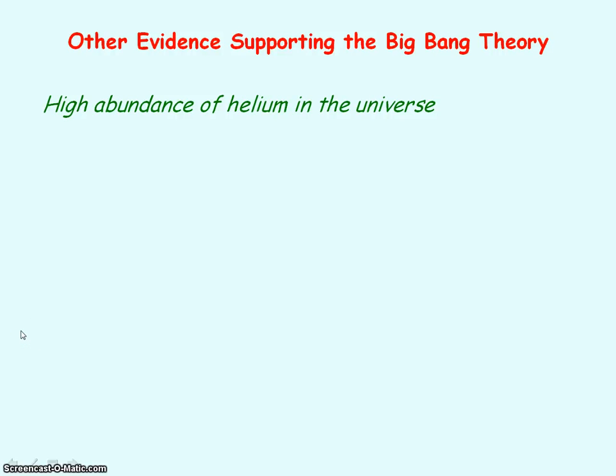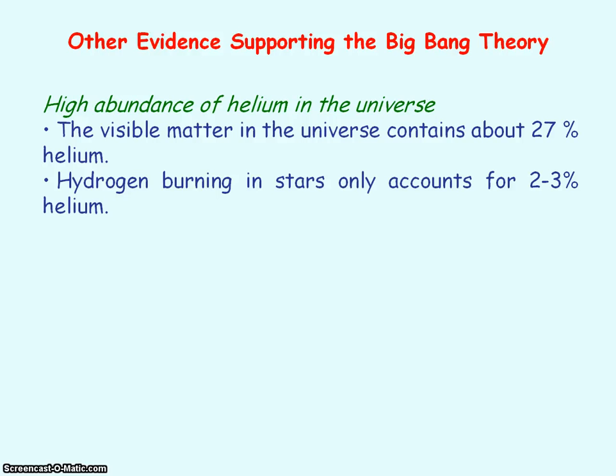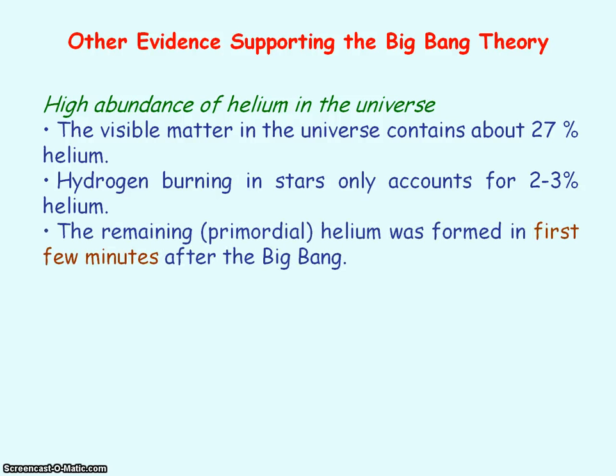Other evidence that supports the big bang theory is the high abundance of helium in the universe. The visible matter, that is what we can see in the universe, stars and galaxies, contains about 27% of helium. Fusion of hydrogen nuclei into helium nuclei only accounts to 2 to 3%. So the remaining helium was formed in the first few minutes after the big bang. And this helium is known as primordial helium.